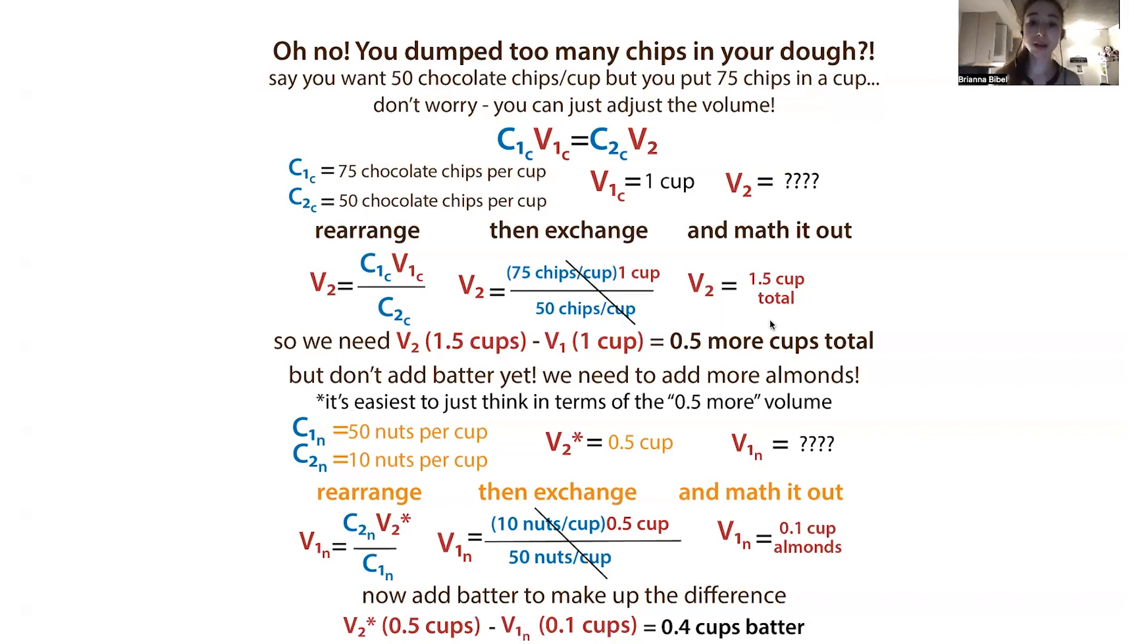But don't just go adding half a cup of batter, because we need to add more almonds too. If we were to just add the batter, then our almonds would be too diluted. There are different ways you could do this. I find it easiest just to think in terms of you need 0.5 cups more volume. So you can do this whole equation. Our new final volume is going to be half a cup, because this is in terms of what we're adding. We can rearrange and figure out we need to add 0.1 cup of almonds. Now we need to add batter to make up the difference. We're taking our V2, which is going to be our half a cup, minus our V1 of nuts, which is 0.1 cups, and we see that we need to have 0.4 cups of batter.